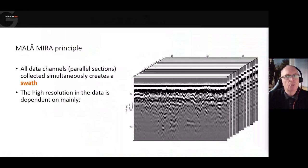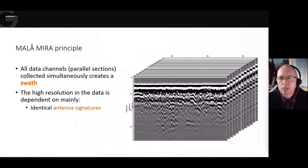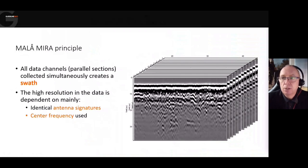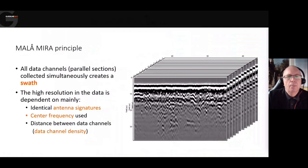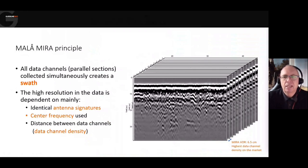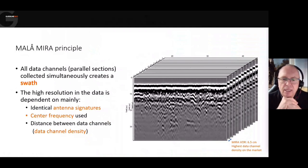This high-resolution dataset comes from taking measurements at very tight channel spacing and inline measurement. The quality of the data depends on identical antenna signatures — each antenna must be as close to each other as possible from a signature point of view. We need to consider the central frequency, which affects resolution and channel spacing. With the Marlowe Mira HDR, we have a 6.5 cm channel spacing between each of the profiles, and we typically collect 6–6.5 cm inline trace intervals.